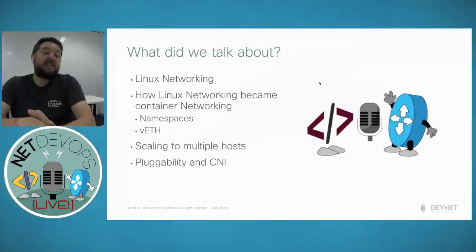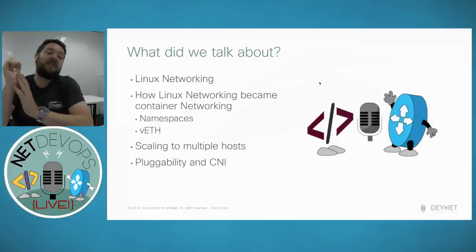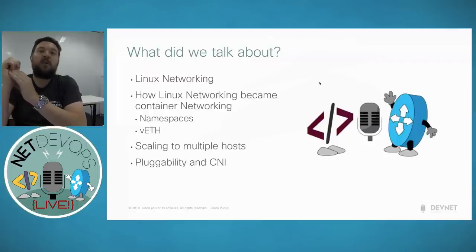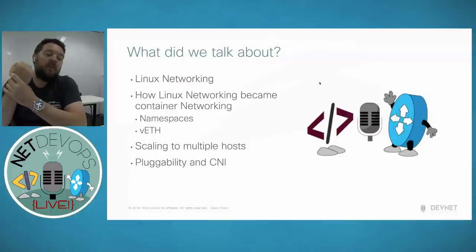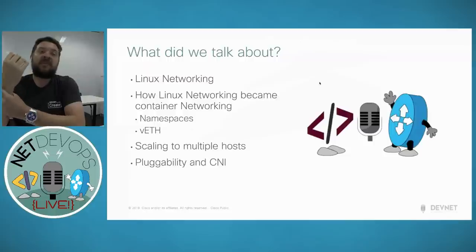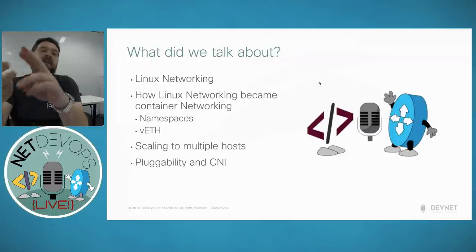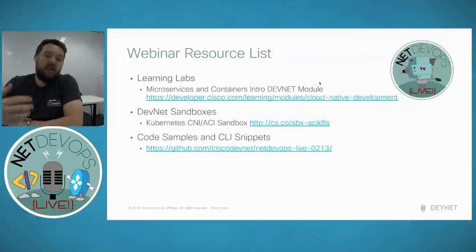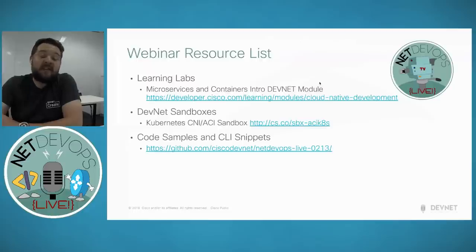To sum up: we've talked extensively about how Linux networking is pretty much all you need to know about container networking. We've covered namespaces and veths as the two main building blocks, looked at how that scales to multiple hosts with tools that automate it rather than going it alone, and briefly covered the CNI standard that people write plugins in so they can be consumed by Kubernetes, Docker Swarm, and other container orchestrators.